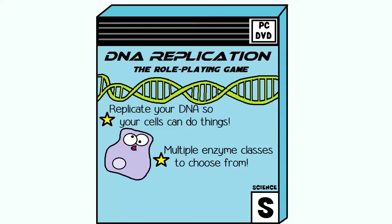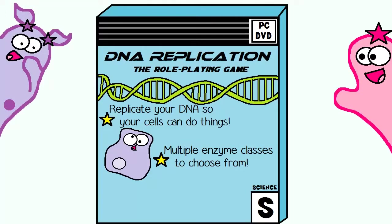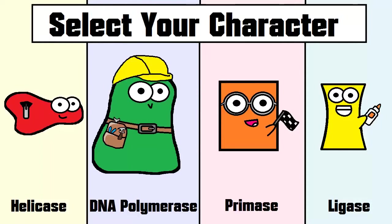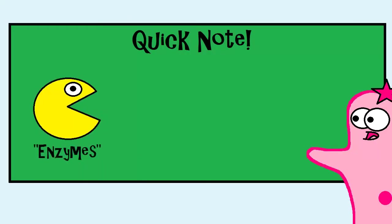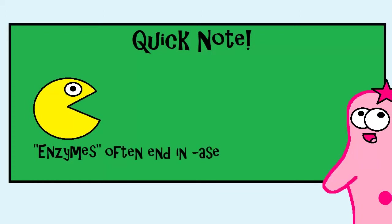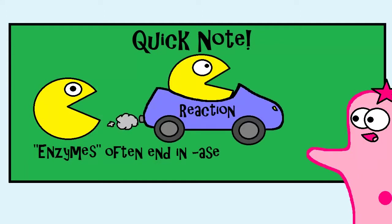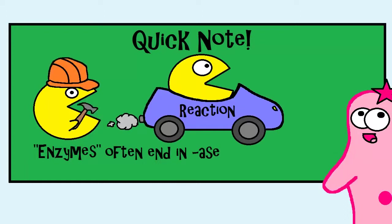I think DNA replication would actually make a great video game — it's actually quite exciting. I'm going to introduce the key players in DNA replication so you can get some background information. The majority of these key players are enzymes. In biology, when you see something end in A-S-E, you might want to check, as it's very possible it may be an enzyme. Enzymes have the ability to speed up reactions and build up or break down the items that they act on.